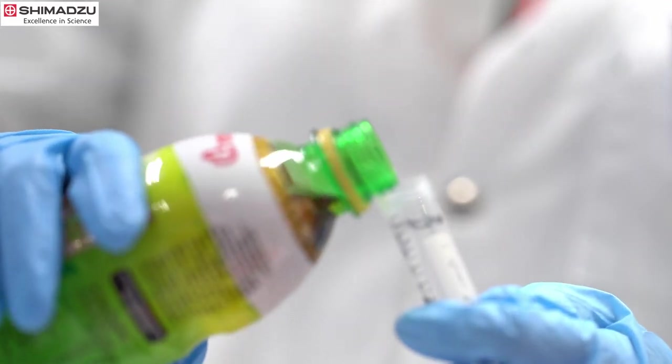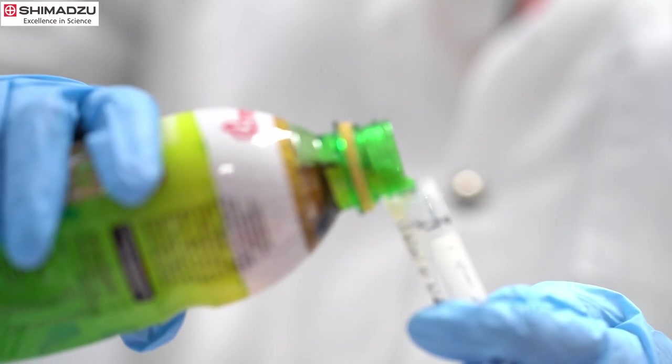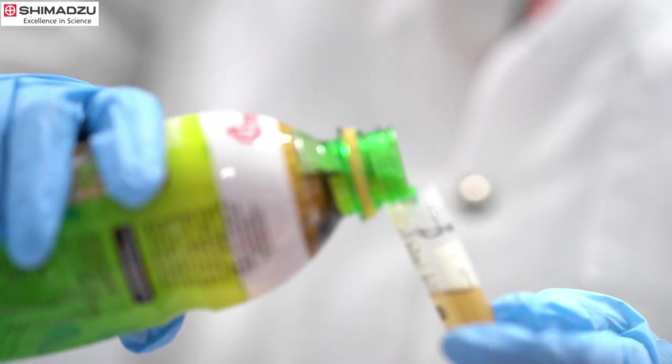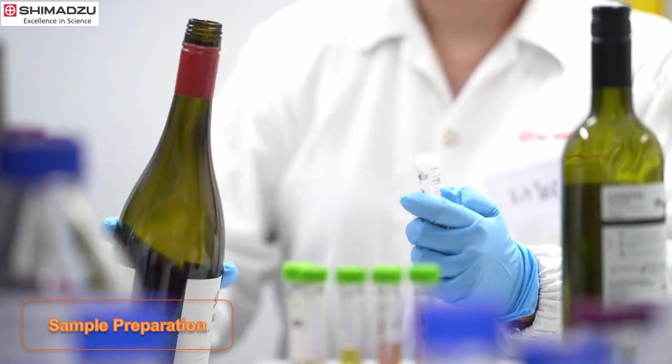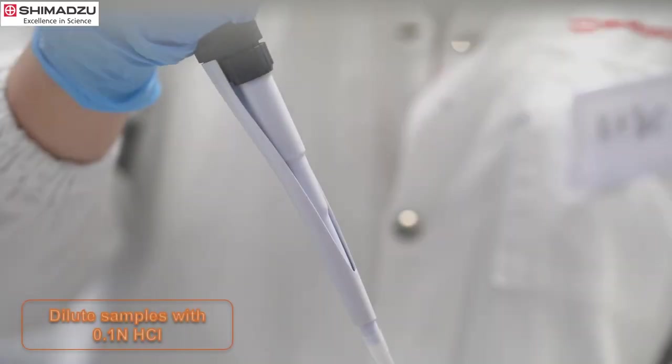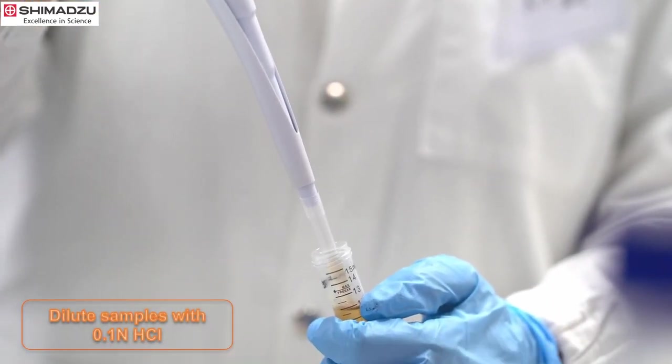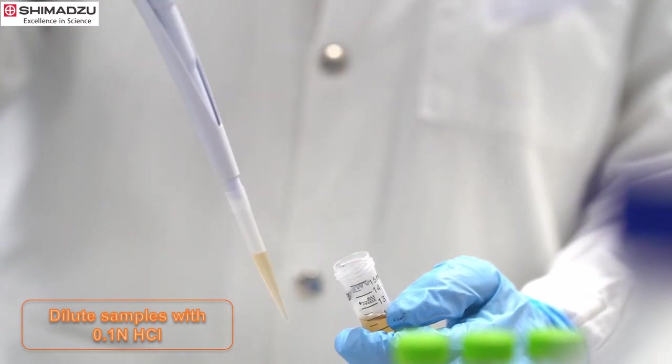Let's start with the sample preparation. Transfer the drink to a 15 mL centrifuge tube or test tube. Perform two times dilution to the sample using 0.1 N hydrochloric acid.